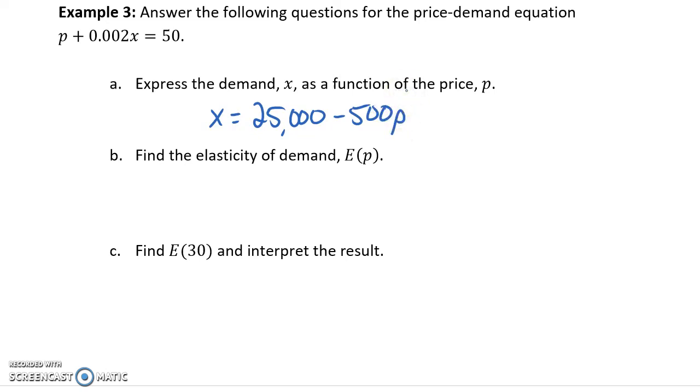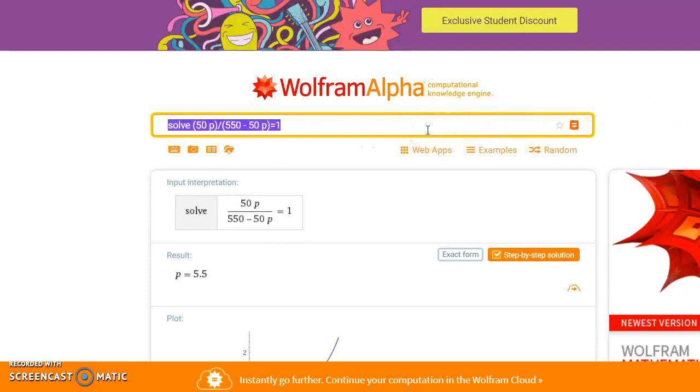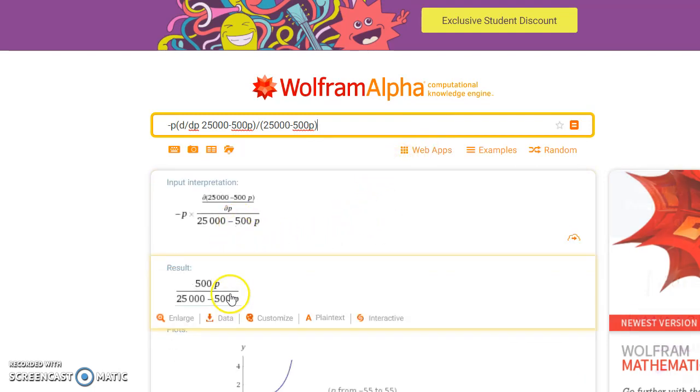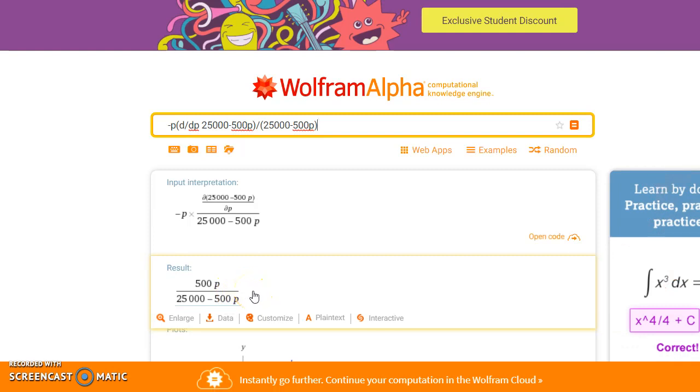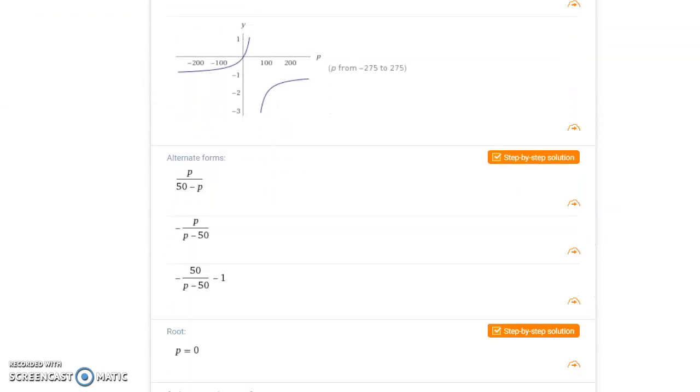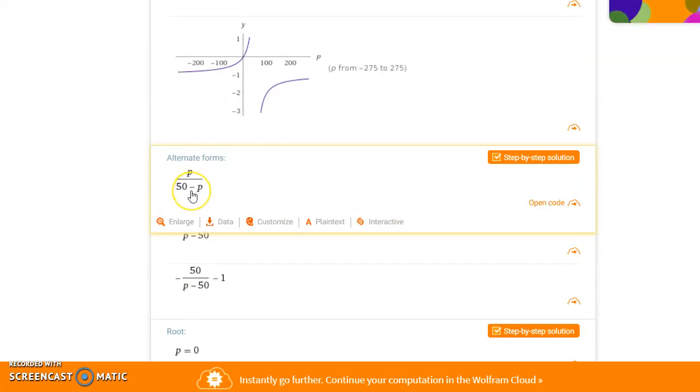From there, we want to calculate the elasticity of demand function. So, we'll enter in those statements again. Check our input to ensure that's what we are after. And what we end up with is 500p over 25,000 minus 500p. And again, if we wanted to, we could get that reduced form by clicking on the output. And then looking at these alternate forms. So, in this case, this would reduce pretty nicely to p over 50 minus p.